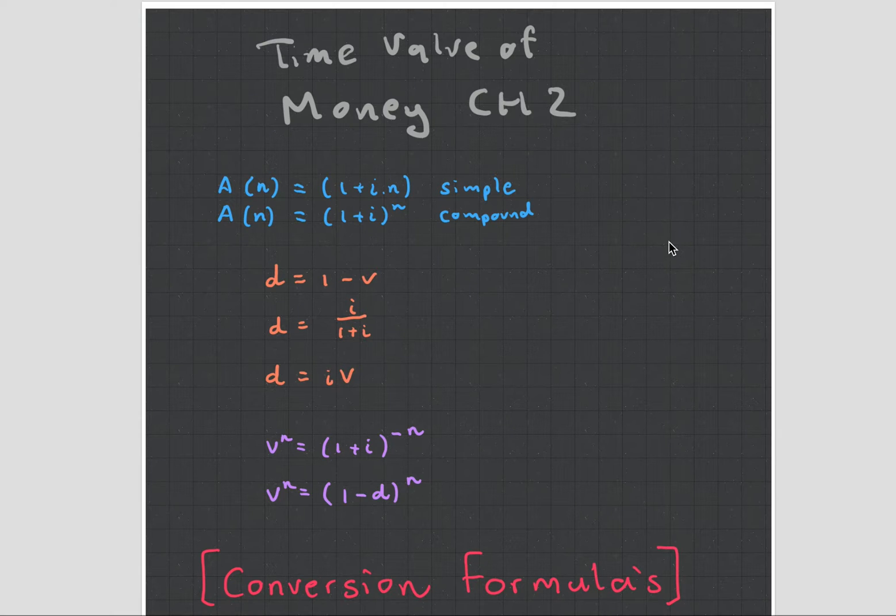It seeks to answer how much money is worth as it changes throughout time. The cool thing you use to calculate this is interest. There are two types of models: the simple interest model and the compound interest model. The simple interest model isn't really used in real life, whereas the compound model is.